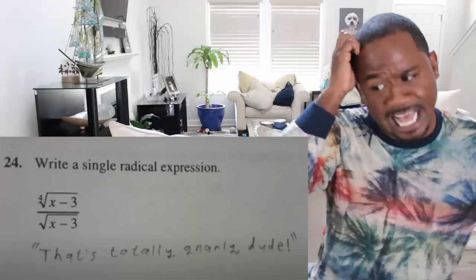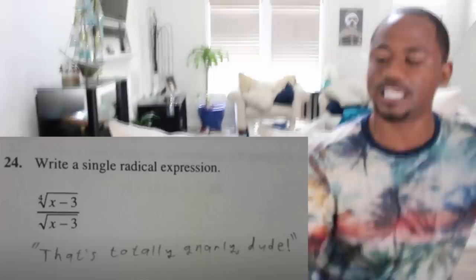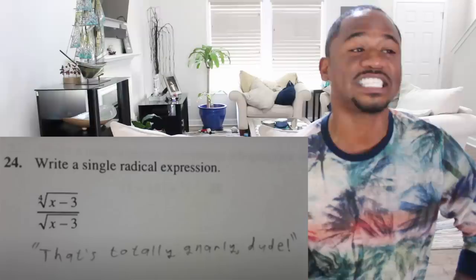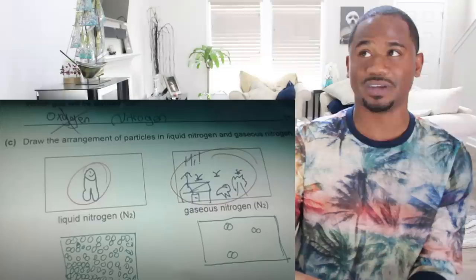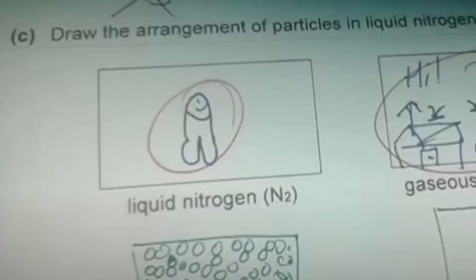Write a single radical expression — oh my god. Depending on my day, I don't even know if I'm going to give this kid half a point. Draw the arrangement of particles in liquid nitrogen and gaseous nitrogen. I don't even understand a word of this. This kid circled what I think is a fish swimming upwards. I don't even know what is going on in this equation — I need to go back to school.